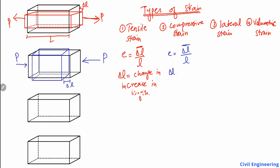Because of the load application in the longitudinal direction, the object is compressed and we have a decrease in length. The strain created inside this object is known as compressive strain because it is due to the compressive load.